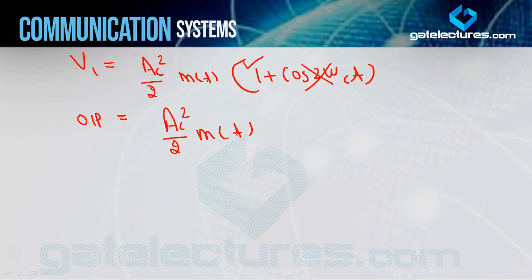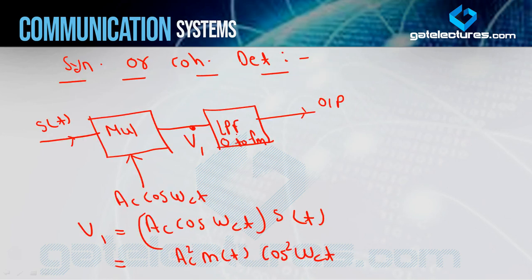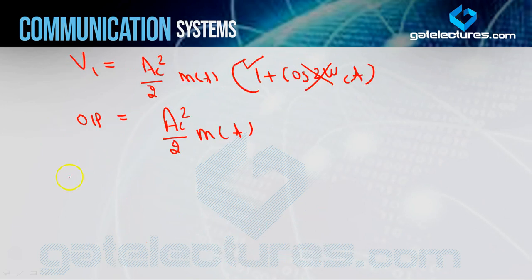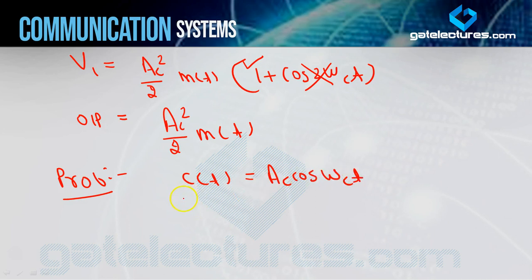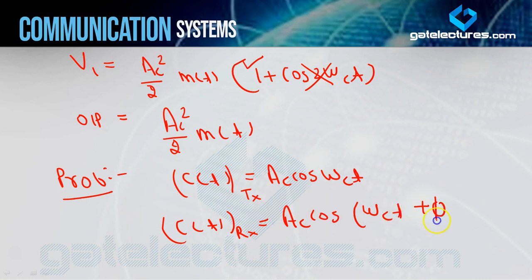This is a very easy technique, but here also one problem arises, as it did in DSB-FC. The problem is: if the carrier used on the receiver side is not the same as the one used on the transmitter side, there will be a problem. It must be the same in terms of phase and frequency. Suppose the transmitter side carrier used was AC·cos(ωCt), and the receiver side carrier being used is AC·cos(ωCt + φ) — meaning there is a phase difference of φ between transmitter and receiver carriers.